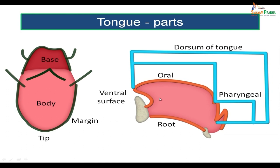The oral surface is again divided into two parts: an anterior part which is the oral part located in the oral cavity, and the posterior part — the pharyngeal part located in the pharynx. On the dorsum of the tongue, you see a prominent V-shaped sulcus called the sulcus terminalis. The part in front of the sulcus terminalis is the body of the tongue, and the posterior part is the base of the tongue. The sides are called the margins of the tongue.